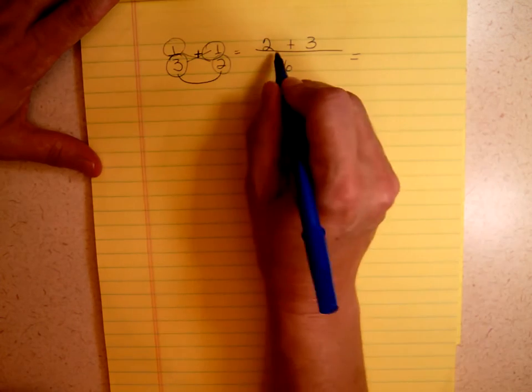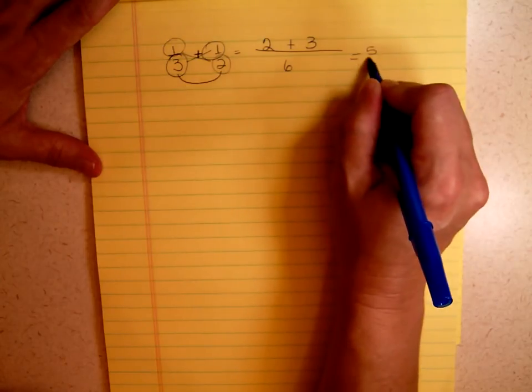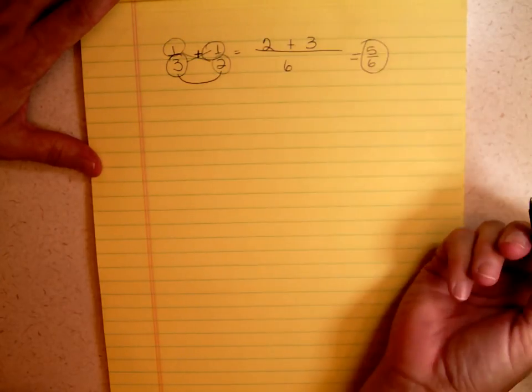Now I simply add that together. 2 plus 3 is 5 over 6, and that's my answer, 5/6.